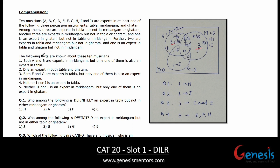One is an expert in G but not in T and M, so only G is 1. Two are experts in T and M but not in G — so the T∩M (not G) region is 2.